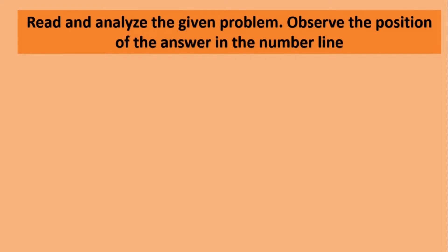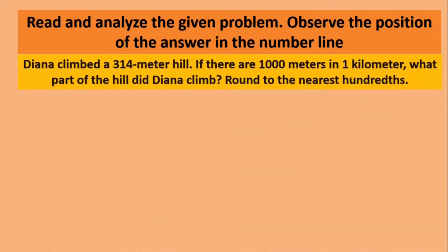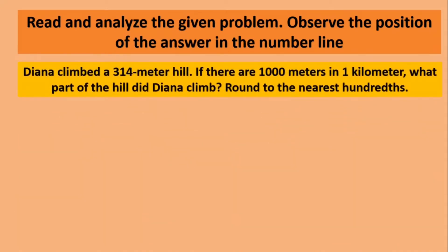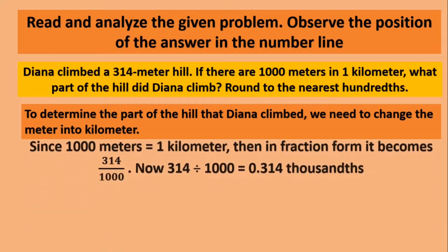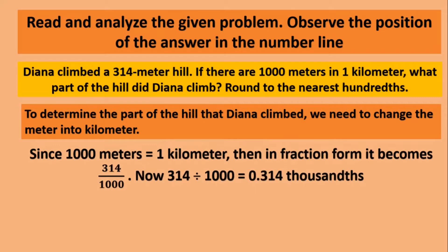Read and analyze the given problem. Observe the position of the answer in the number line. Diana climbed a 314-meter hill. If there are 1,000 meters in 1 kilometer, what part of the hill did Diana climb? Round to the nearest hundreds. To determine the part of the hill that Diana climbed, we need to change the meters into kilometers. Since 1,000 meters is equivalent to 1 kilometer, then in fraction form, it becomes 314 over 1,000.